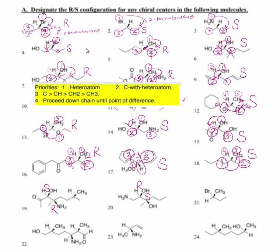Number twenty-one: H is number four, bromine is going to be number one, which makes one side number two and the other side number three. You have to put yourself in the right orientation or draw it differently. Imagining looking at the molecule from the correct angle: bromine is number one, this part of the molecule is number two, the methyl group is number three, and hydrogen is number four. Rotating one, two, three this way makes this an R configuration.